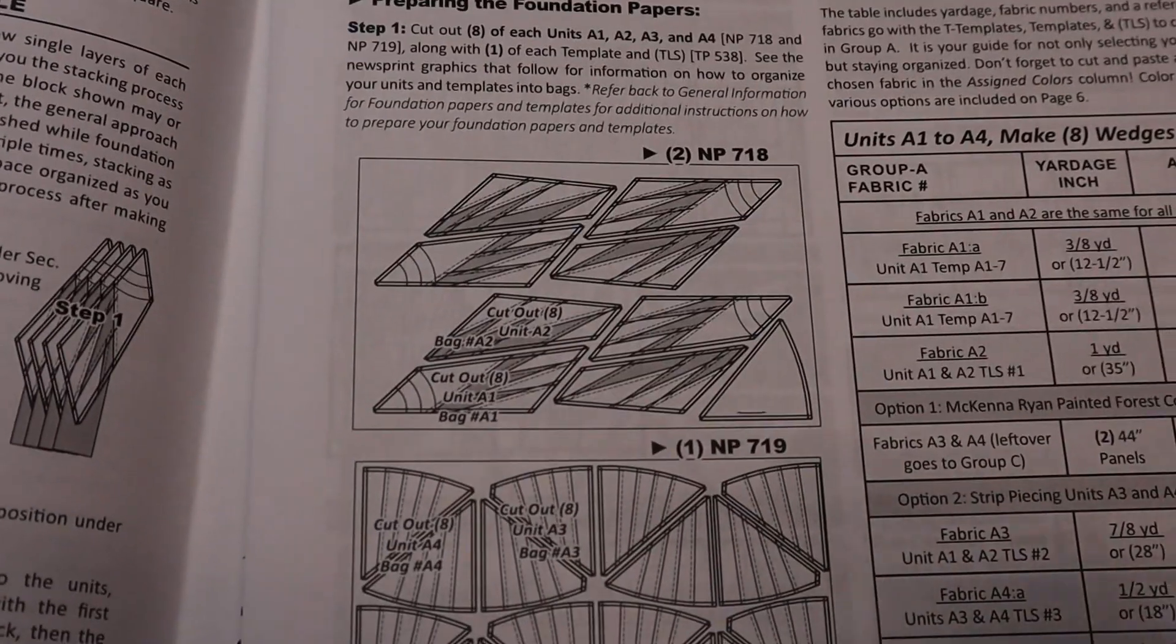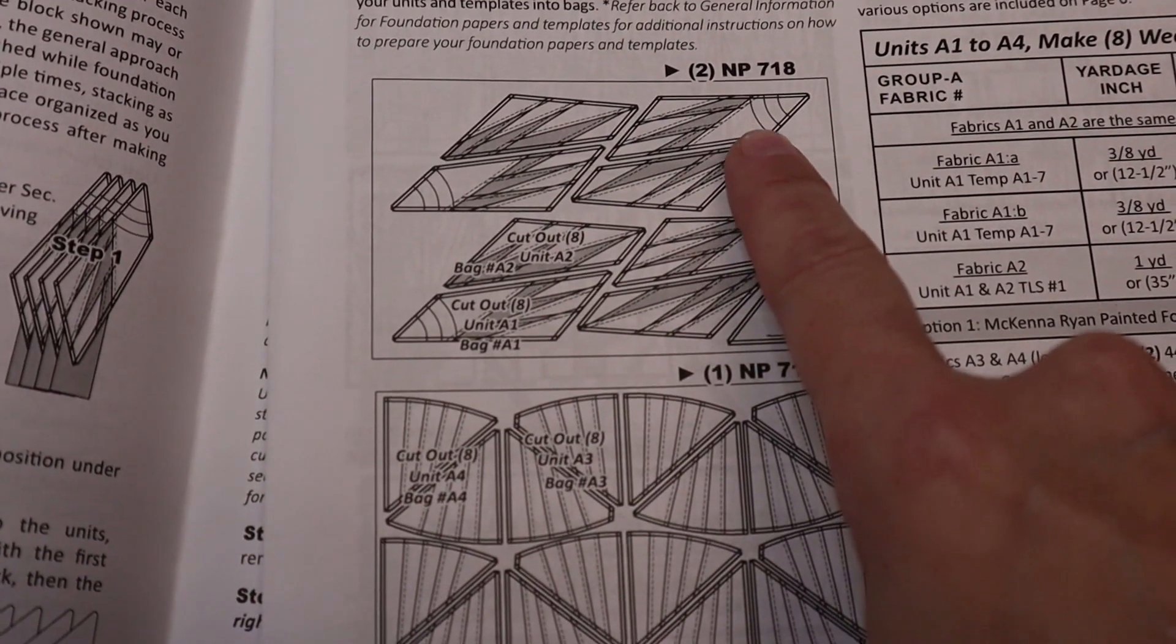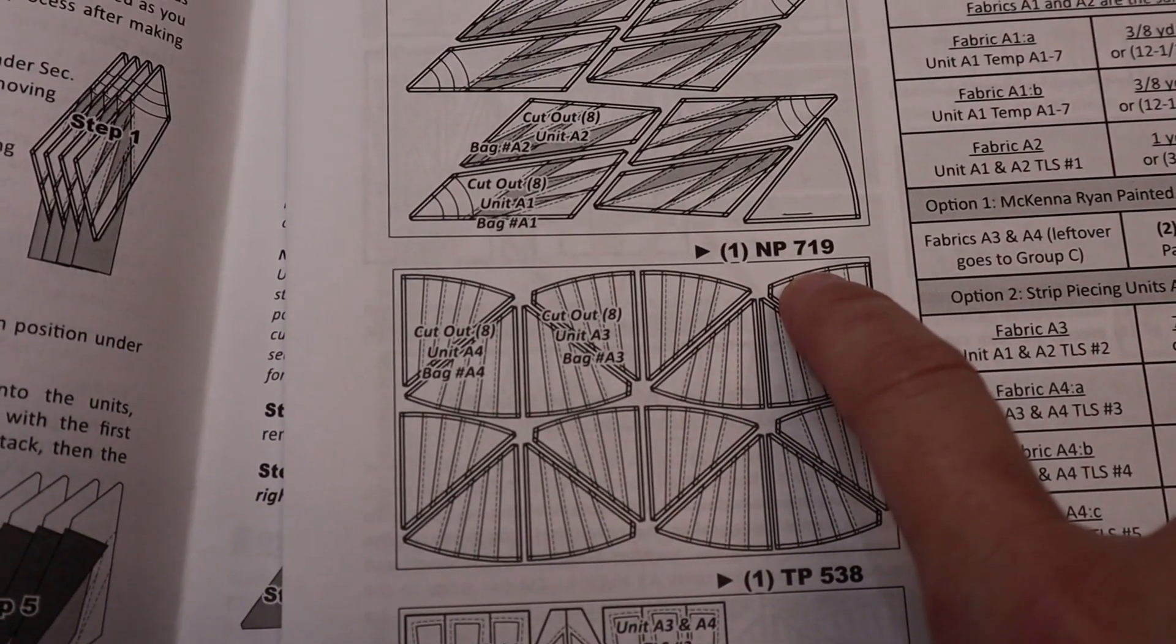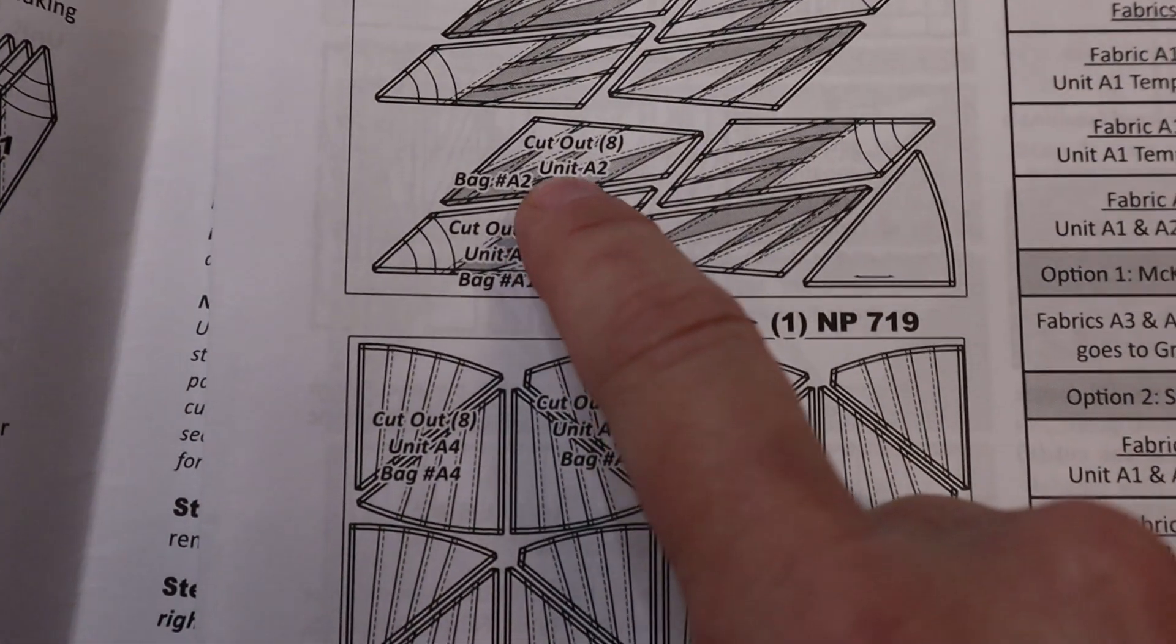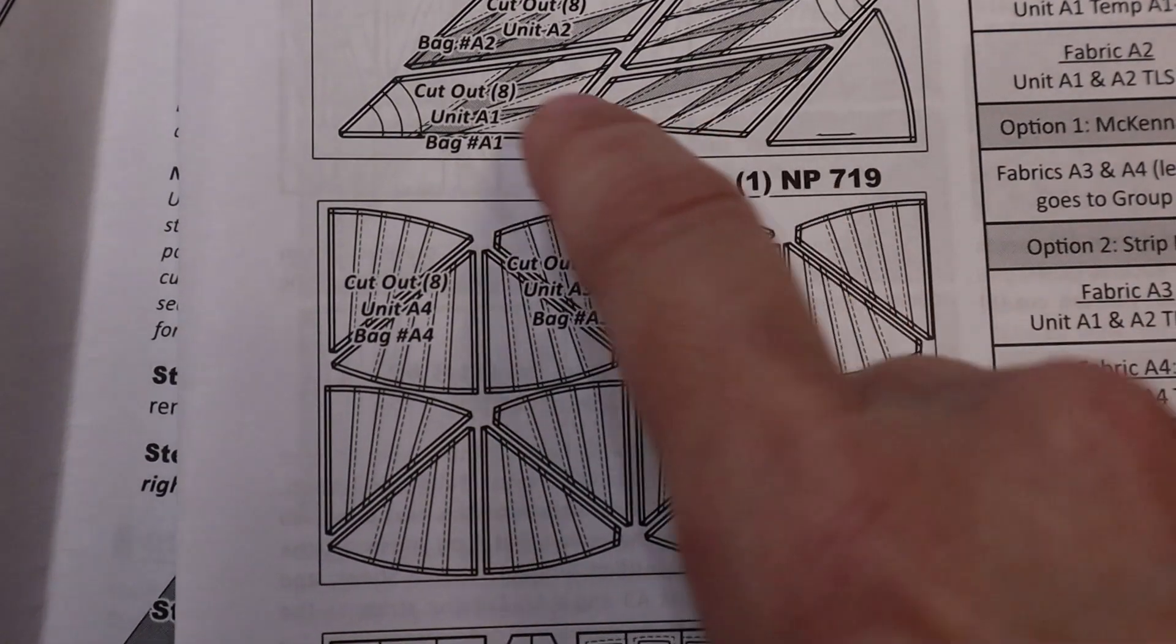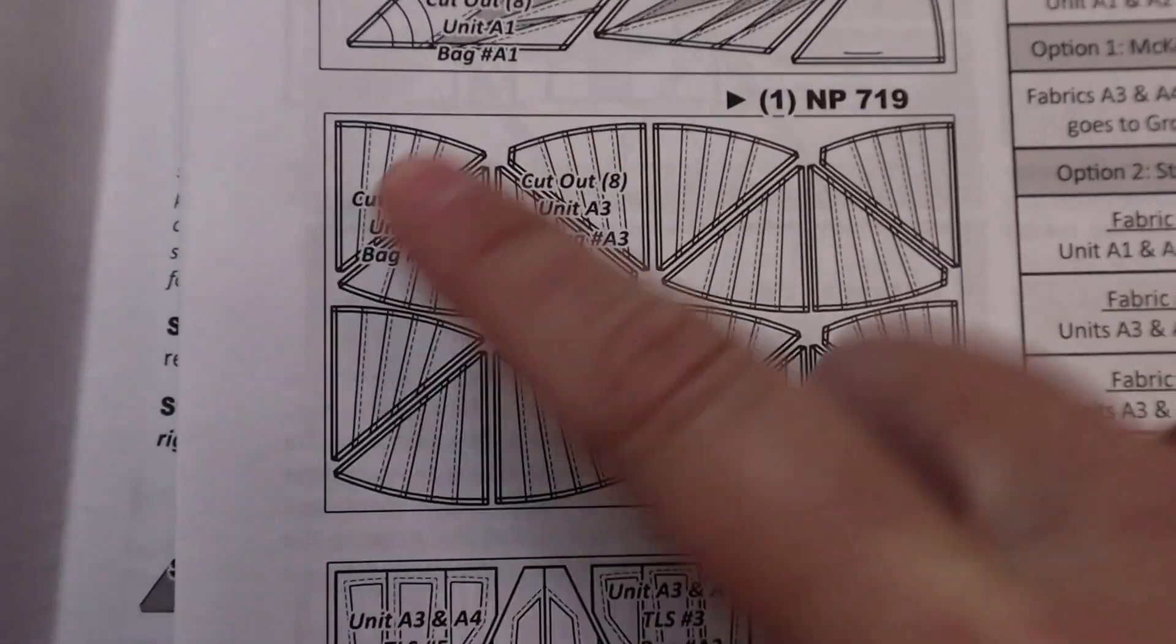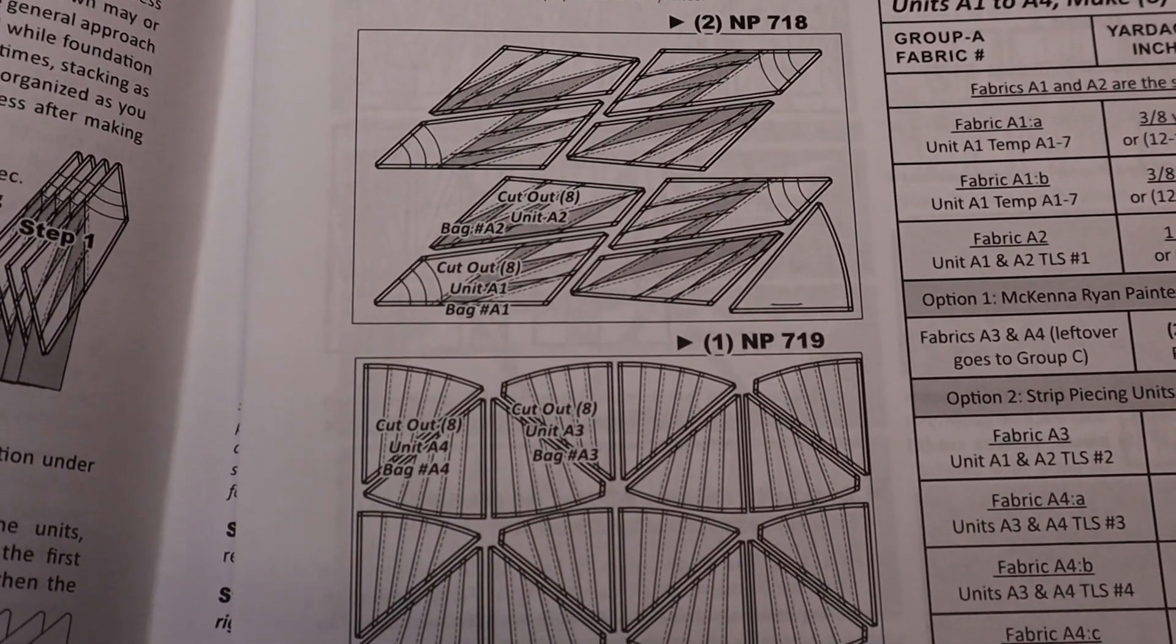Okay? Then, as you come down the page, it shows you an actual kind of mini diagram of what your newsprint page is going to look like. And it tells you how many sheets there are right here. So for this one, there's two newsprint 718. This one, there's one newsprint 719. It will also tell you, if you look real closely, it will tell you how many to cut out and what bag number they go into. So once you cut out your papers, you'll know that this one goes into bag A2, and this one here goes into bag A1, and it tells you there's eight and eight. So I always reference that to get an idea of how many pieces I'm going to have and what bag the papers go into.